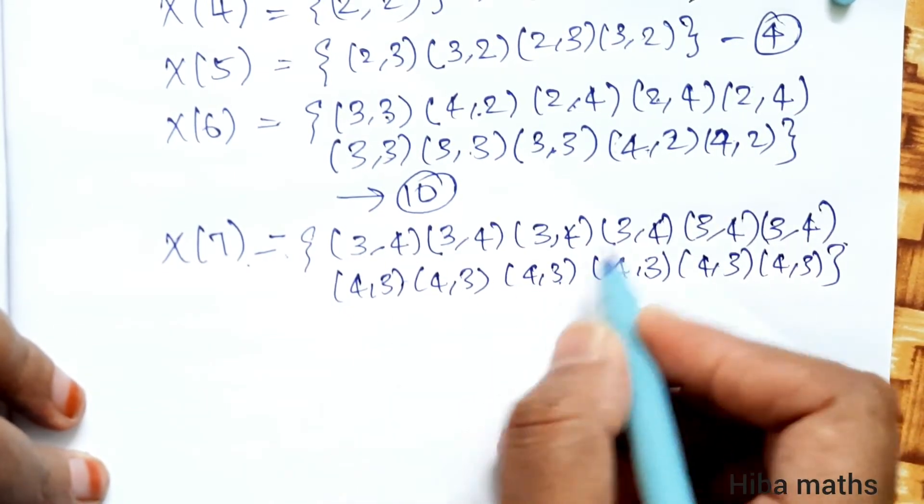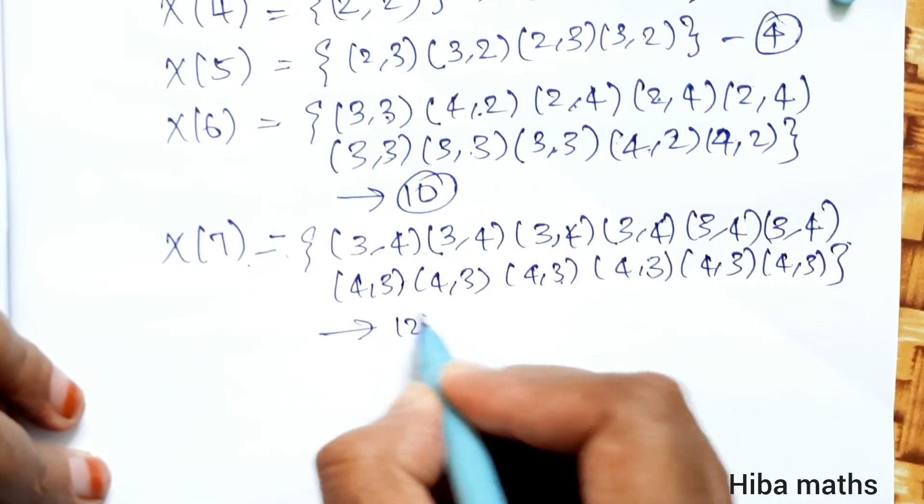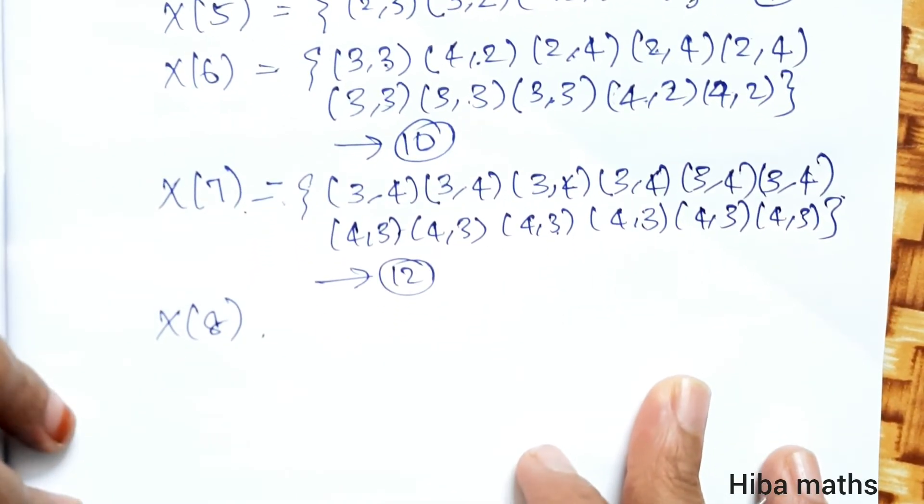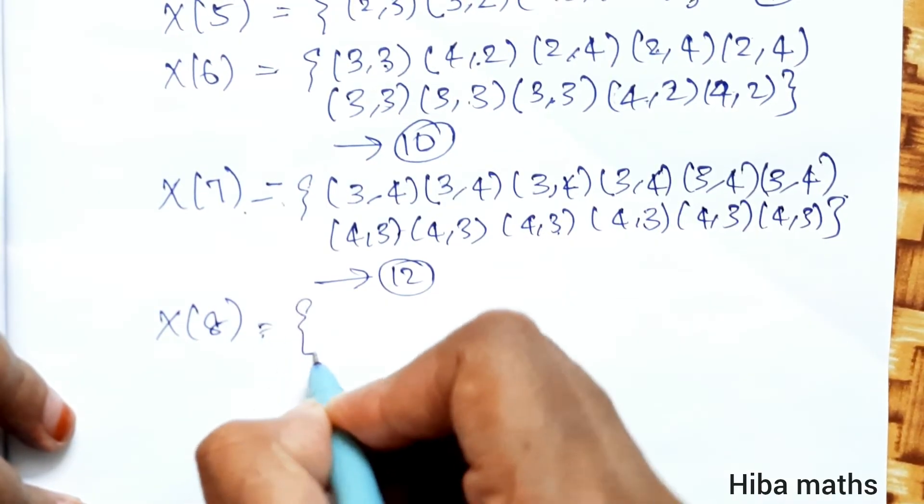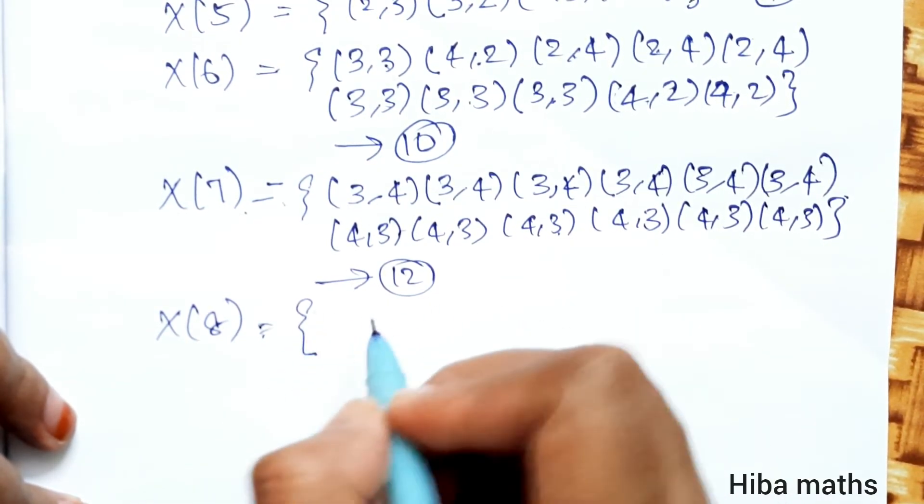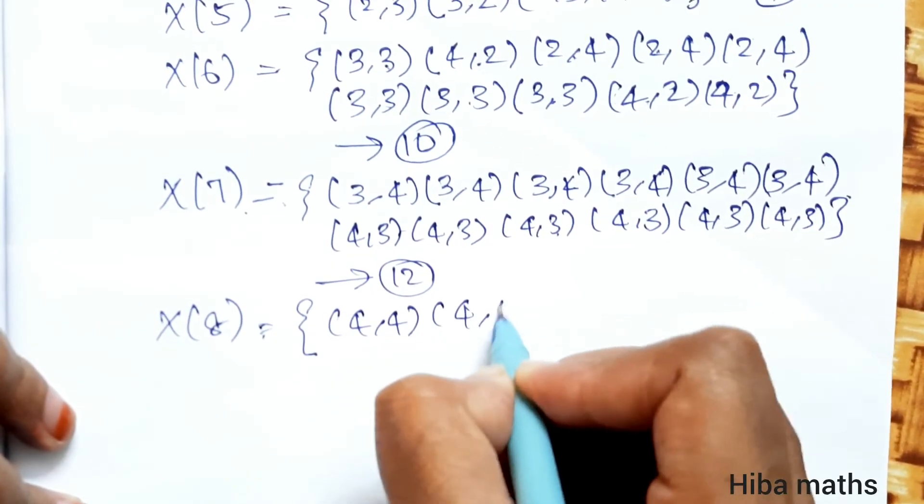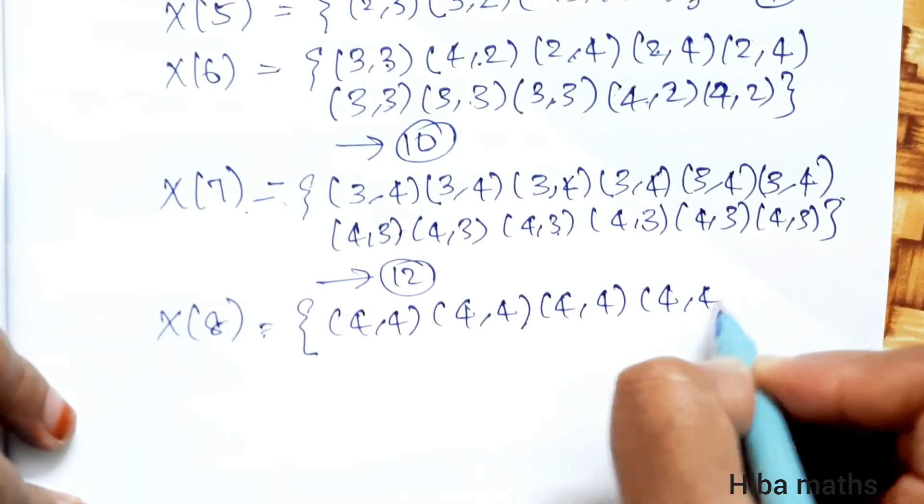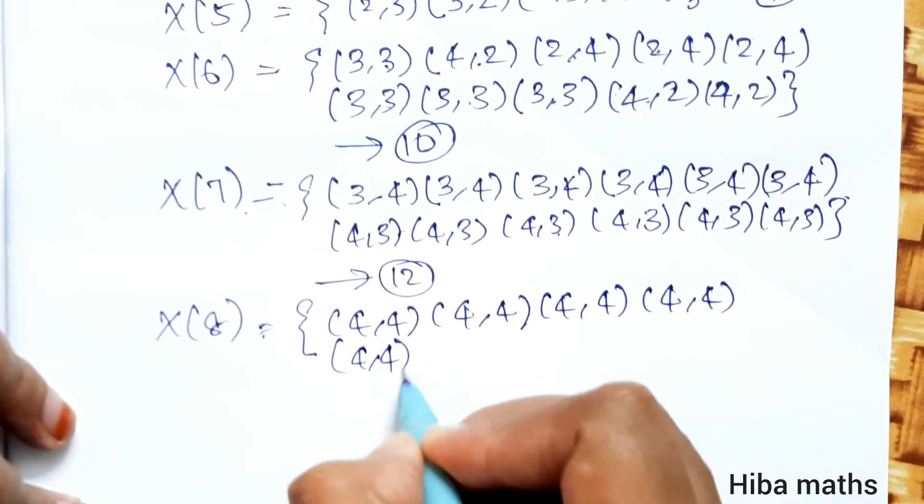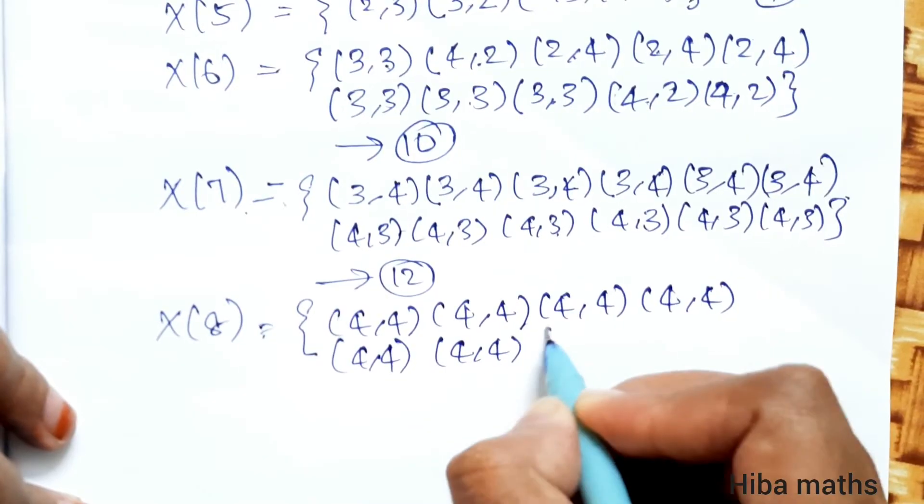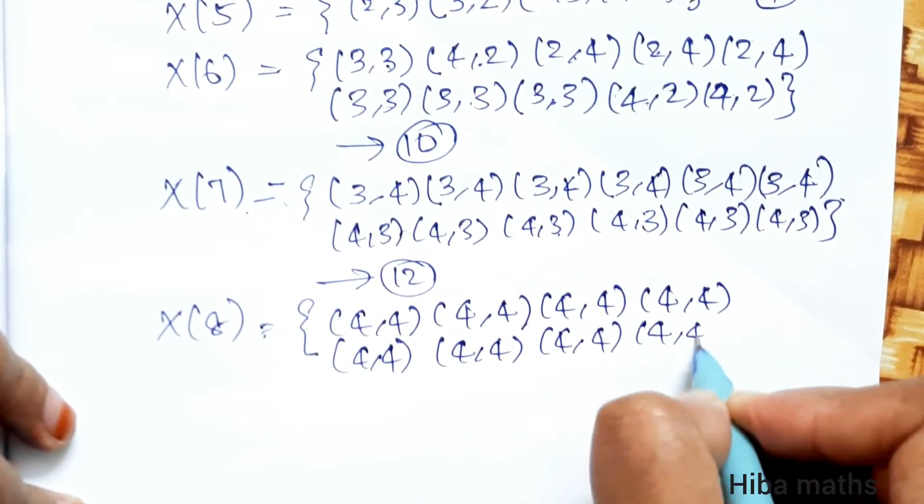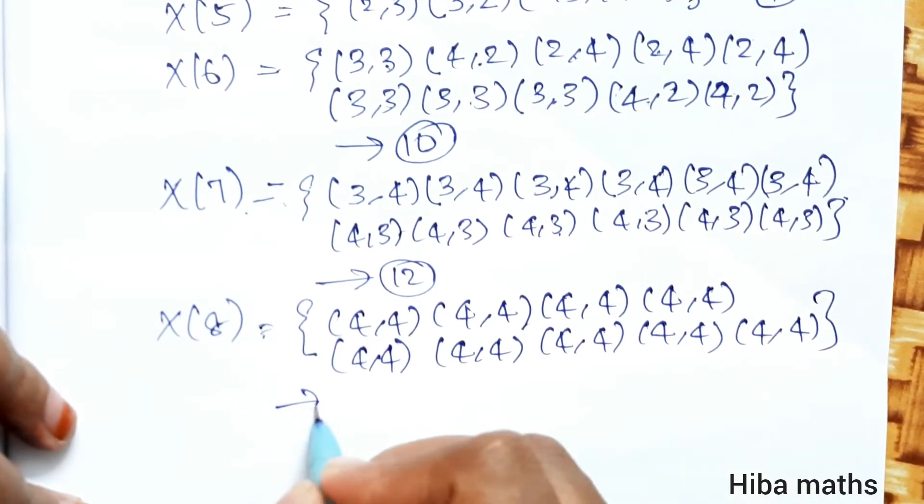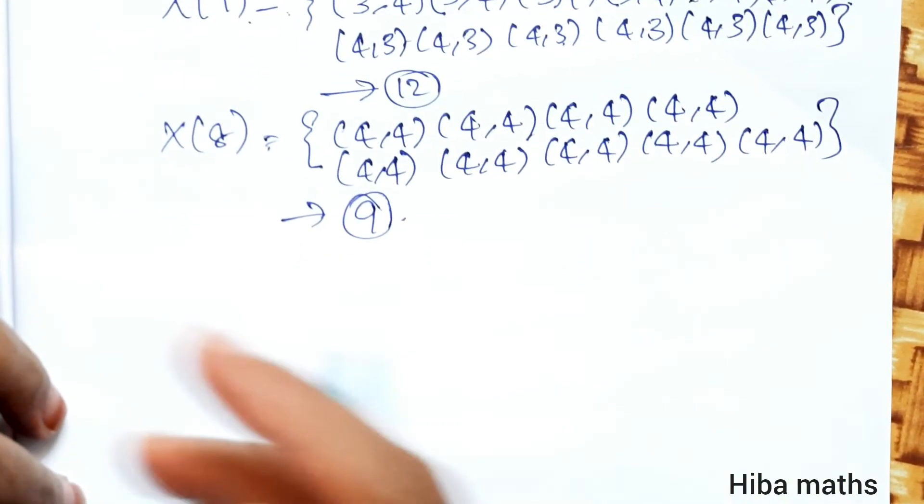X of 8, the last one, is 4,4 which appears 9 times. So total 9 outcomes.